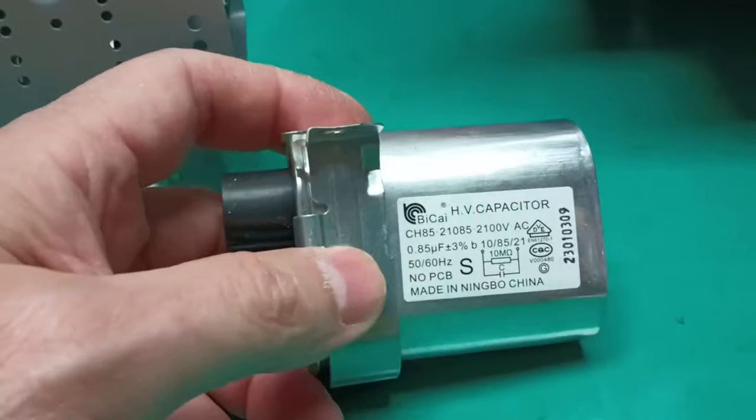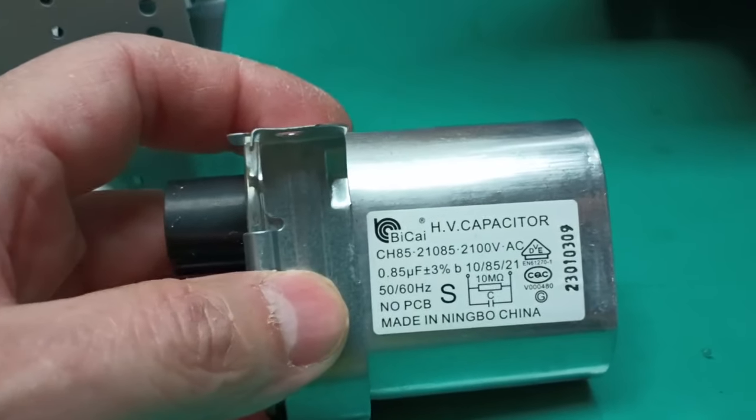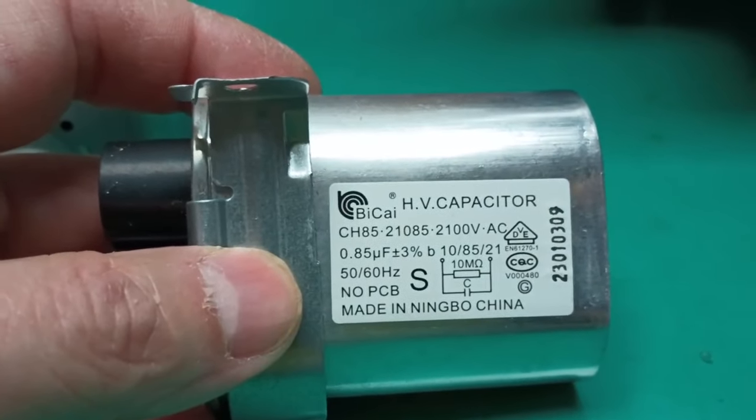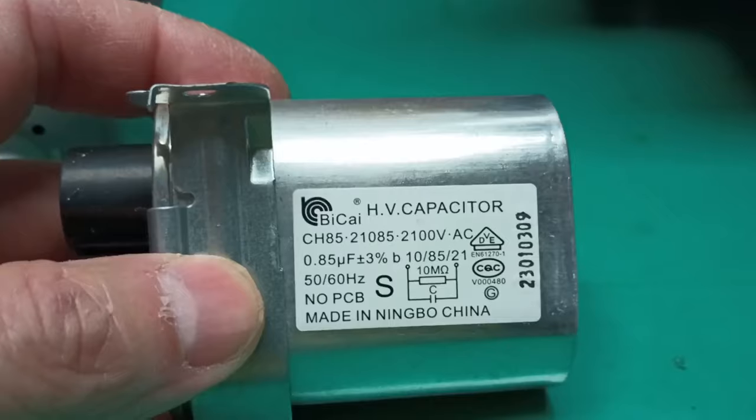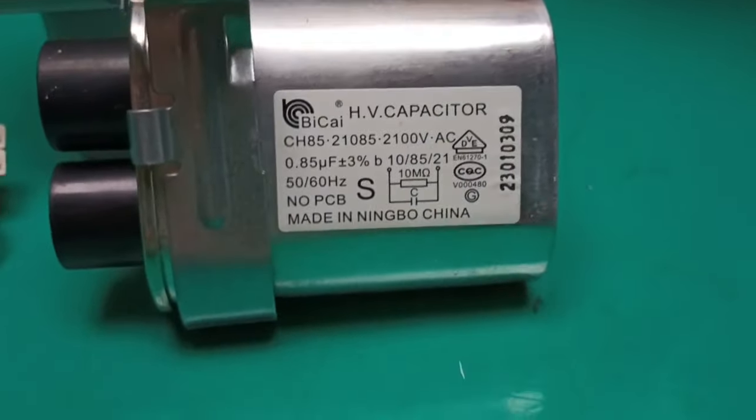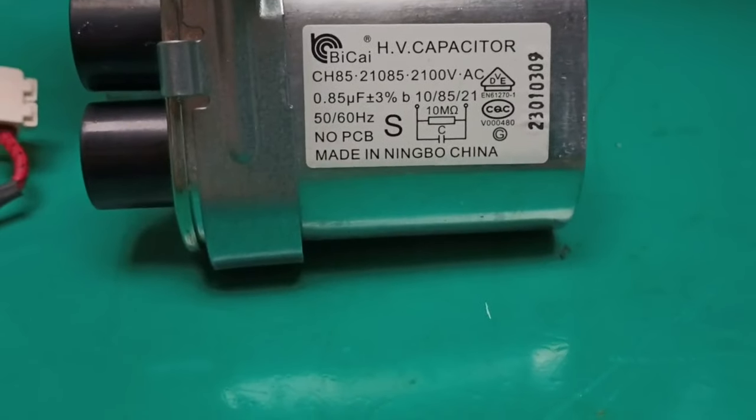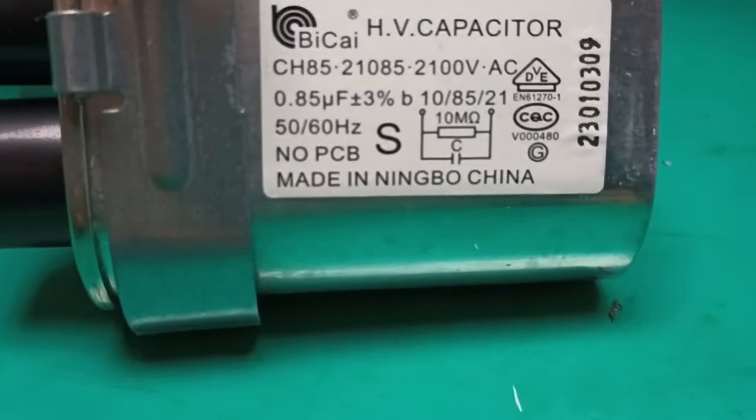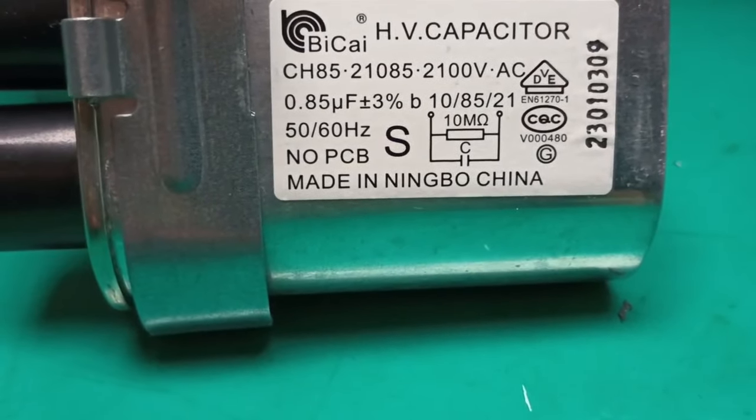And that's all there is for the supposed filter capacitor. And it is and it isn't. Notice it's 0.85 microfarad, 2100 volts AC. Doesn't that remind us of a motor start capacitor? Well, yes, that's how a start cap would be rated.